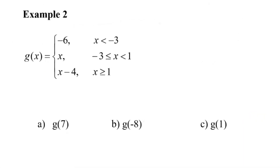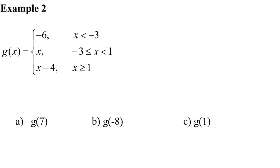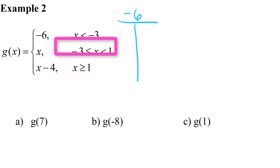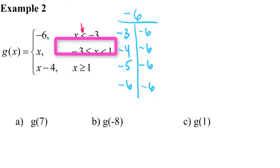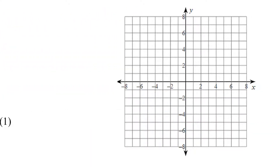Let's get after example two. This one has three pieces. That very first piece is just negative six, and I want my x's to be less than negative three. So I'll start with negative three and choose integers less than that: negative four, negative five, negative six, and so on. No matter what value I plug in, there's no x, so they're all negative six. This symbol means I'm going to have an open dot at negative three, negative six, and then the line extends to the left forever.